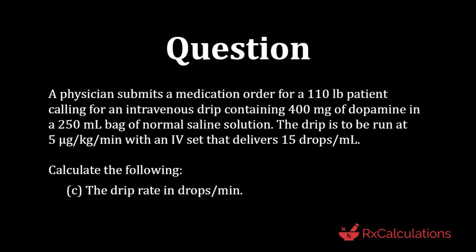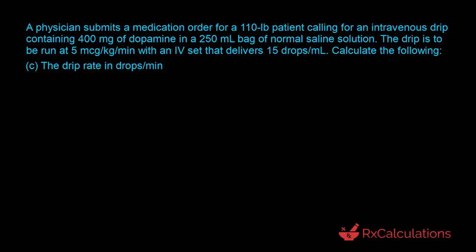Part C asks to calculate the drip rate in drops per minute. The most expeditious way is to use dimensional analysis. We start with the normalized dose rate: 5 micrograms per kilogram per minute, written with kilogram and minute both in the denominator. From there, we need to move from micrograms per kilogram per minute to drops per minute.